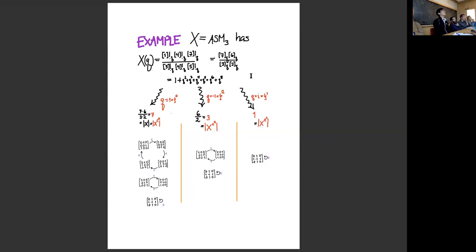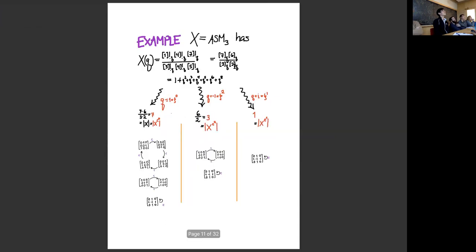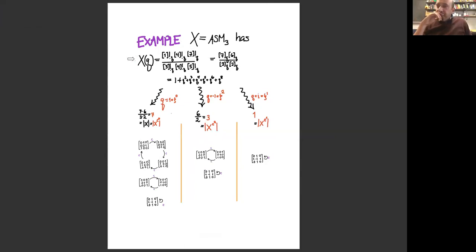One nice thing about having a CSP, even if we don't understand why it happened: the formula X(Q) is easy to remember, and these root-of-unity evaluations are incredibly easy to do when X(Q) is a product formula. Plugging in Q = 1 is just the original count; Q = -1 requires ignoring terms not divisible by 2 and pairing the even terms. For example, 6 and 2 on the top and bottom just give 6/2. That's how you do the Q = -1 evaluation.